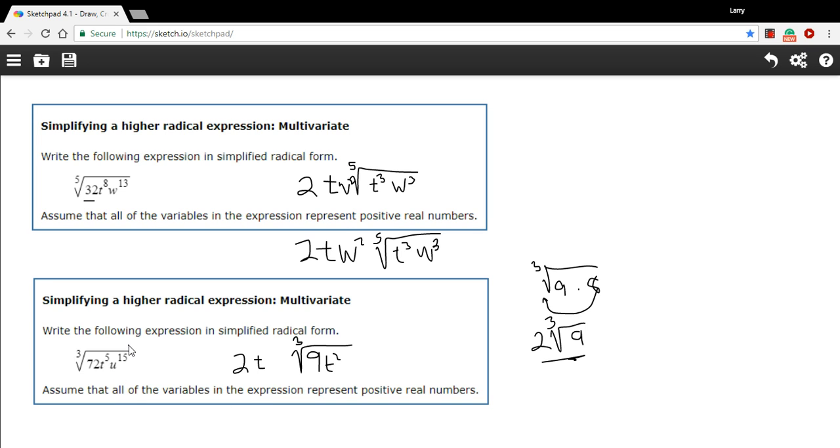And then I've got u to the 15th. Well, I've got 5 groups of 3 in there. And that's all of them. So I can put u to the 5th out here and leave nothing inside. And this is our final answer then. 2 t u to the 5th times the 3rd root of 9 t squared.